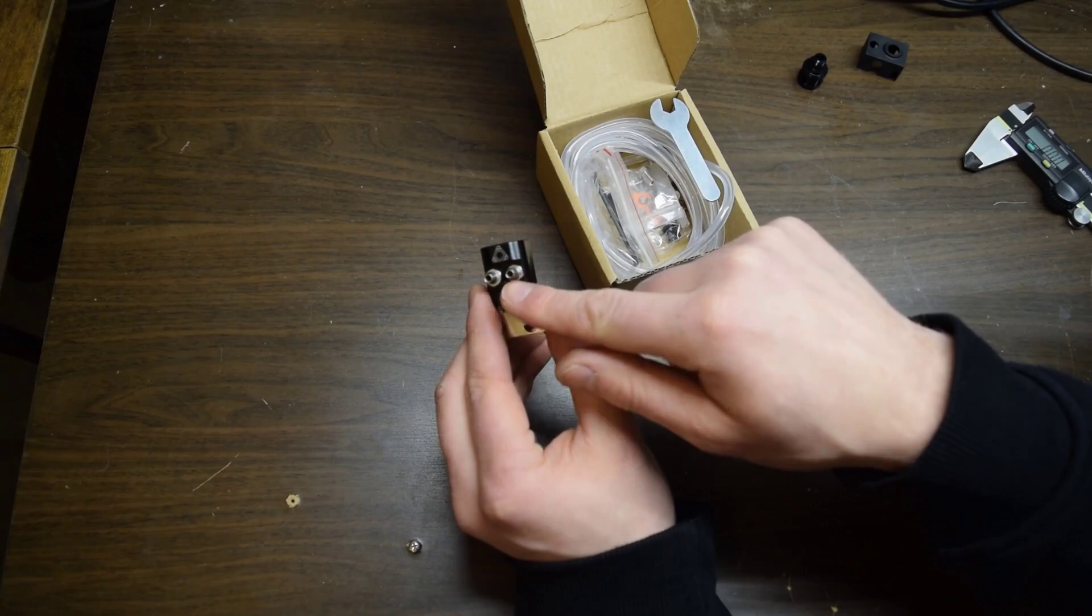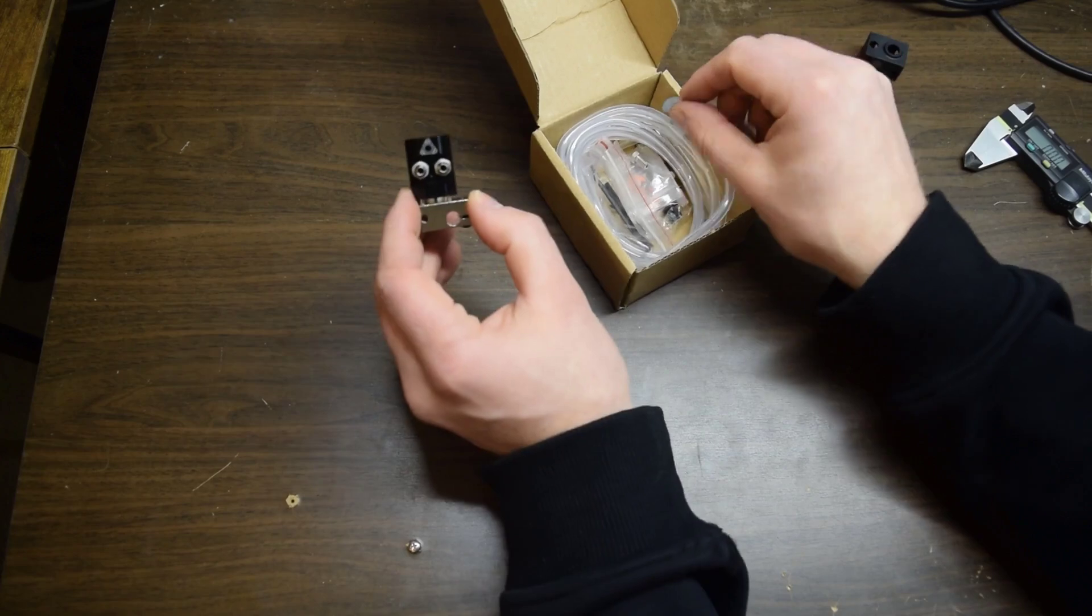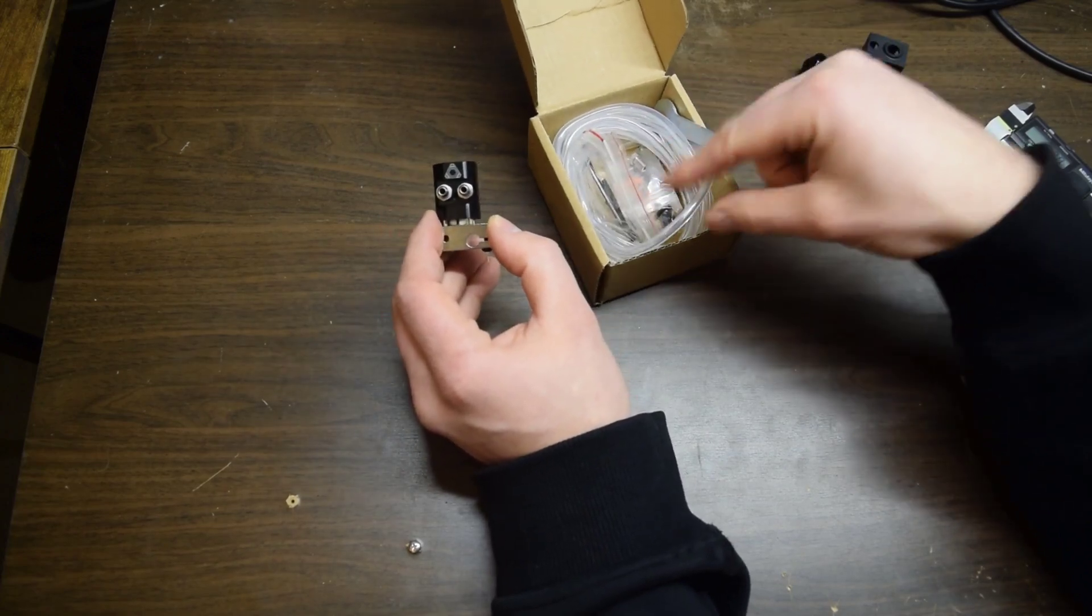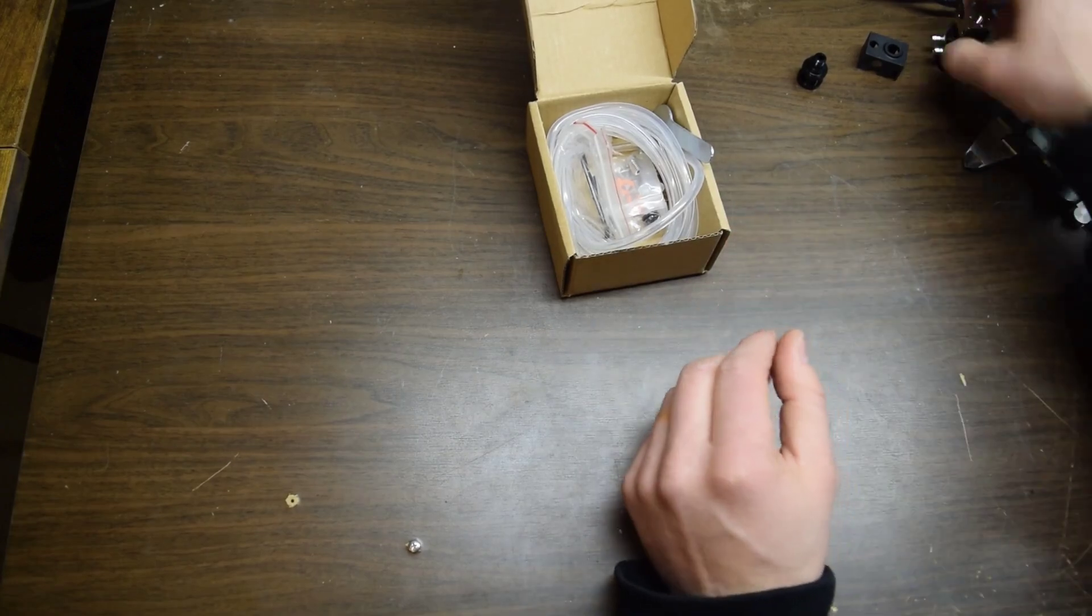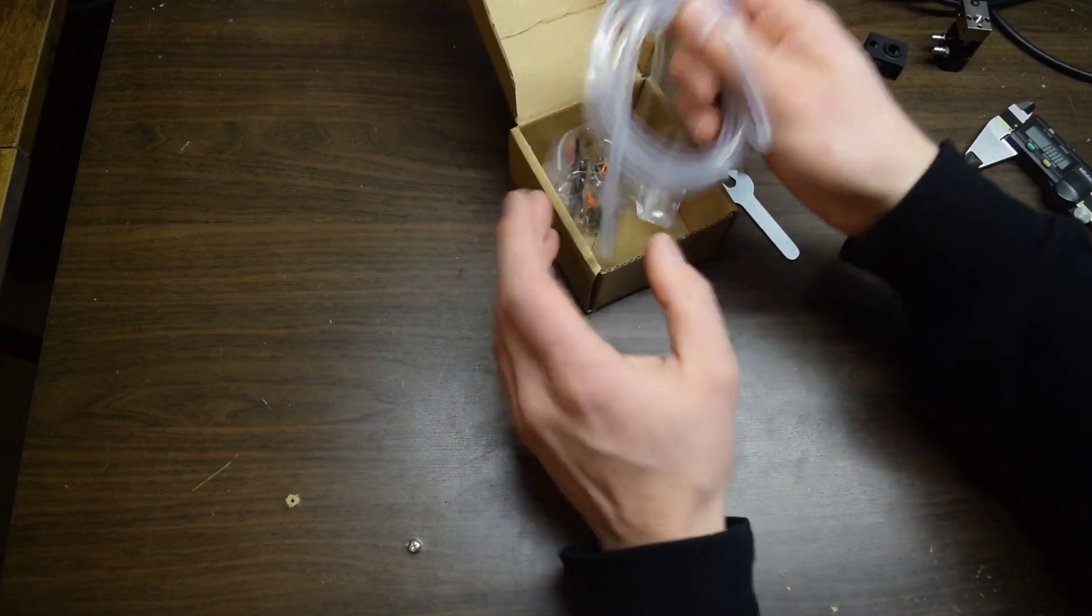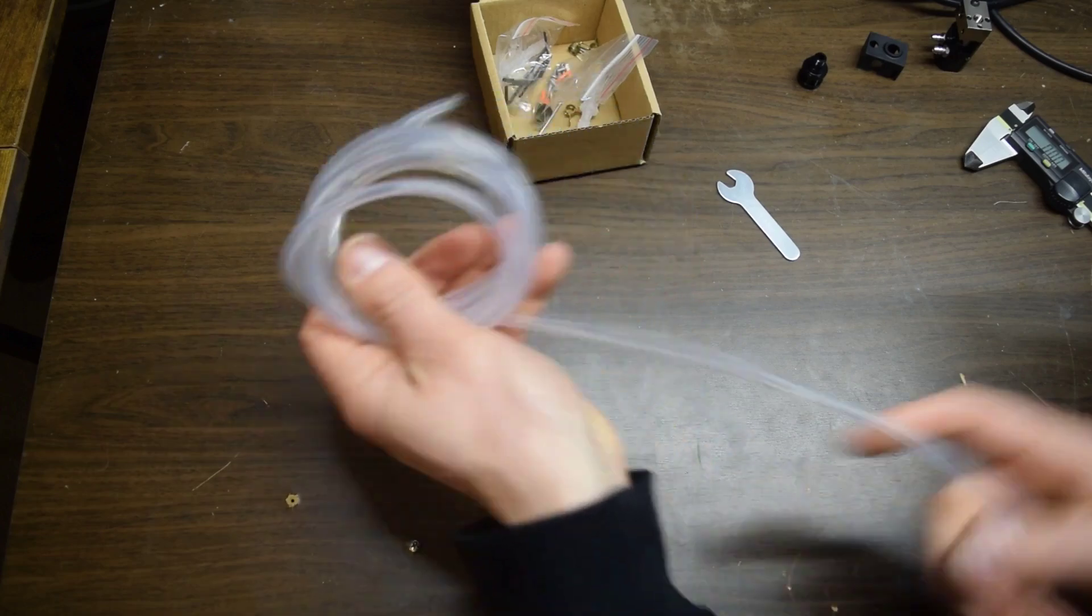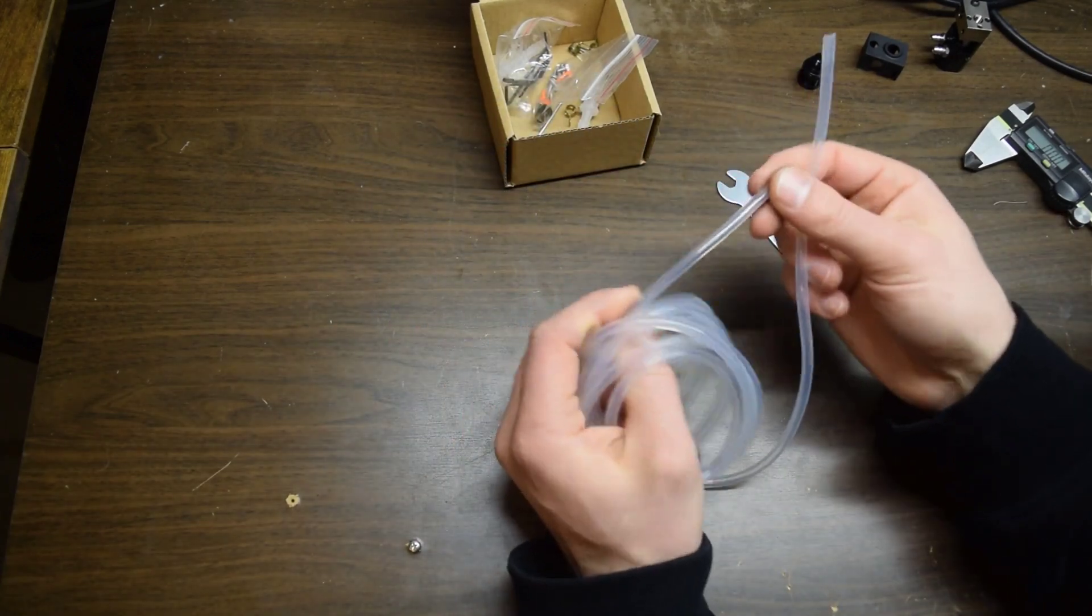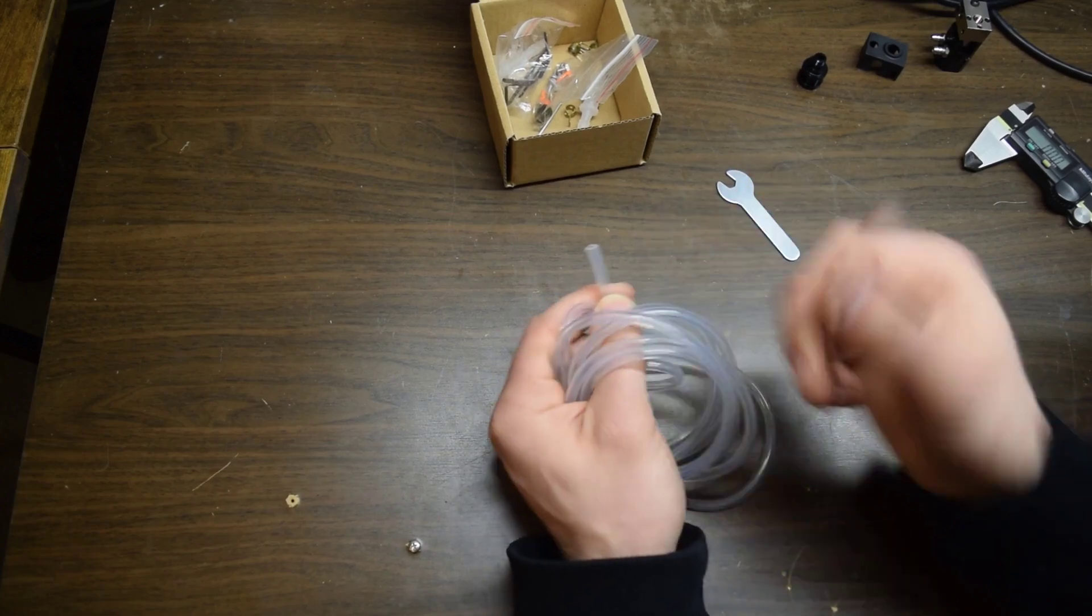We've got barbs here, these are meant for 3mm hose. I think this said it had 2 meters of silicone hose right there. It's nice to see this in here. It kind of sucks when you have to order all this stuff separately. You just get nickel and dimed and it ends up adding up significantly.